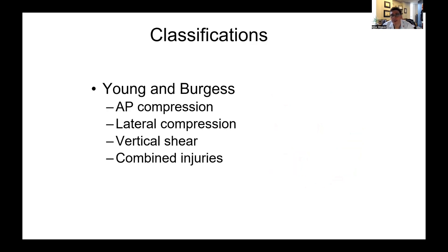When we talk about classifying fractures, the most common classification we use is the Young and Burgess classification, which is really designed to describe the deforming force that injured the pelvis. The four types are AP compression injuries, lateral compression injuries, vertical shear injuries, and combined injuries. Combined injuries can be a combination of two of those, or they could involve an acetabular fracture in addition to the pelvic ring itself.